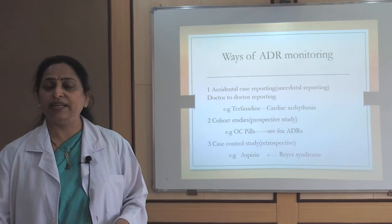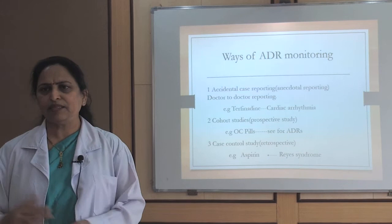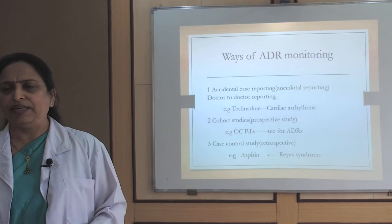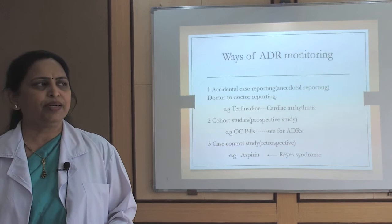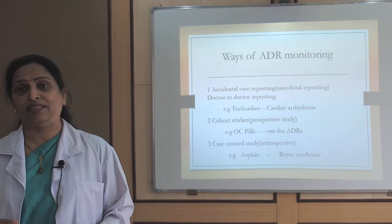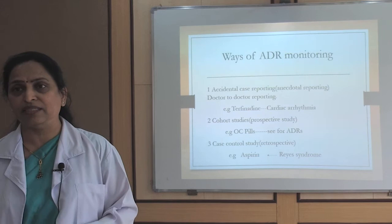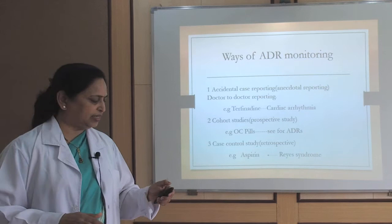Second is cohort studies — prospective, where you give a drug and observe for ADRs. Third is case-control studies — retrospective. For example, aspirin was being prescribed to children for viral infections, leading to Reye's syndrome with fulminant liver failure and deaths. By going back retrospectively, they identified aspirin as the cause. Hence, aspirin should never be prescribed to children under 16 years.